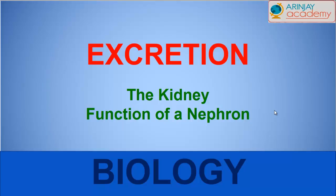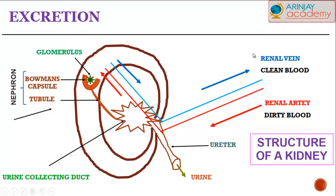Let's have a look at how the kidney functions and the main role of the nephron which is within the kidney. Take a look at the diagram of the kidney. You have the renal vein carrying away the clean blood after the renal artery brings it into the kidney. Within the kidney is situated the Bowman's capsule and the tubule that form the nephron.